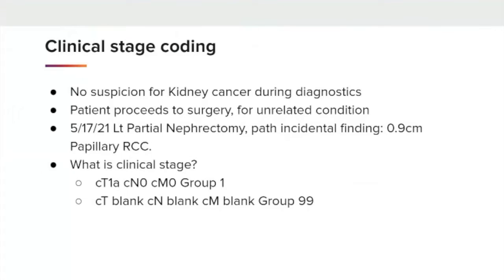Our next example: no suspicion for kidney cancer was found during diagnostics of the patient's symptoms. The patient proceeded to surgery for an unrelated condition. The left partial nephrectomy did show an incidental finding of a 0.9 centimeter papillary renal cell carcinoma. In this scenario, you cannot clinically stage because you do not have a diagnosis of cancer going into the surgery itself — the patient was diagnosed at the time of surgery. Therefore, the clinical stage would be cT blank, cN blank, cM blank, and Group 99.